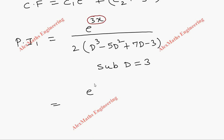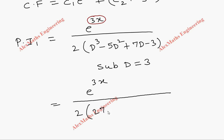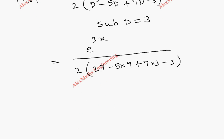Substituting d = 3: the denominator becomes 3³ - 5(3²) + 7(3) - 3 = 27 - 45 + 21 - 3 = 0. So we get 0 in the denominator, giving e^(3x) / (2 × 0), which is undefined.